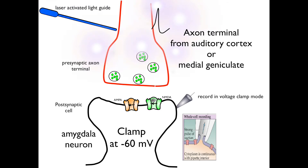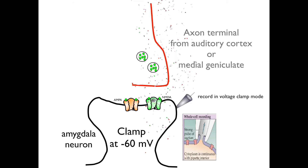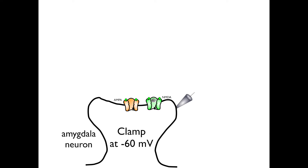The light guide is activated by blue light which excites the transfected axon, causing it to generate an action potential. When the action potential reaches the axon terminal, it causes the release of glutamate, which then binds to both the AMPA and NMDA receptors, causing the gates to open. For simplicity, I'm going to get rid of the presynaptic axon and just look at the amygdala neuron while glutamate is bound to the AMPA and NMDA receptors and the gates are open.